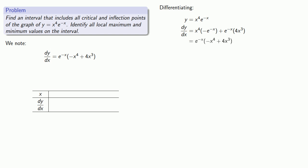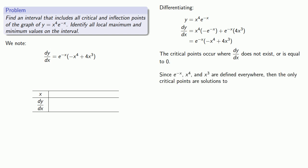The critical points are going to be where the derivative does not exist, or where the derivative is equal to zero. Since e to the minus x, x to the fourth, and x cubed are defined everywhere, then the only critical points are going to be the solutions to derivative equal to zero.